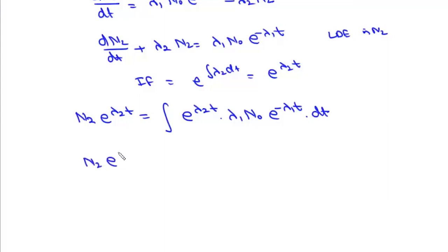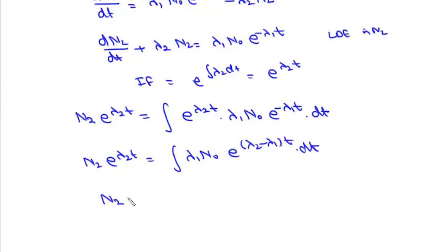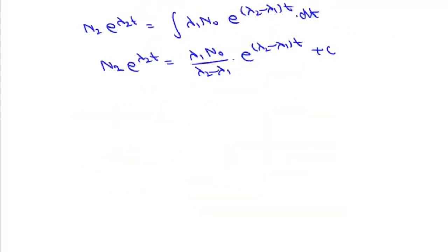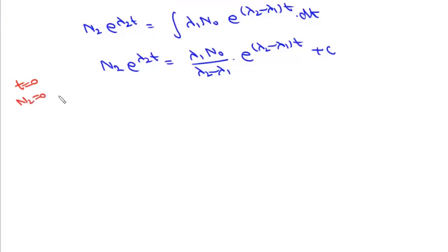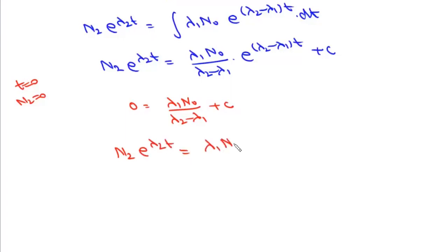We write this as N2·e to the power λ2·T equals λ1·N0 times the integral of e to the power (λ2−λ1)·T dT, which gives λ1·N0 upon (λ2−λ1) times e to the power (λ2−λ1)·T plus C. Applying the initial condition N2=0 at T=0, we find C equals minus λ1·N0/(λ2−λ1). Dividing everything by e to the power λ2·T gives the solution for N2.